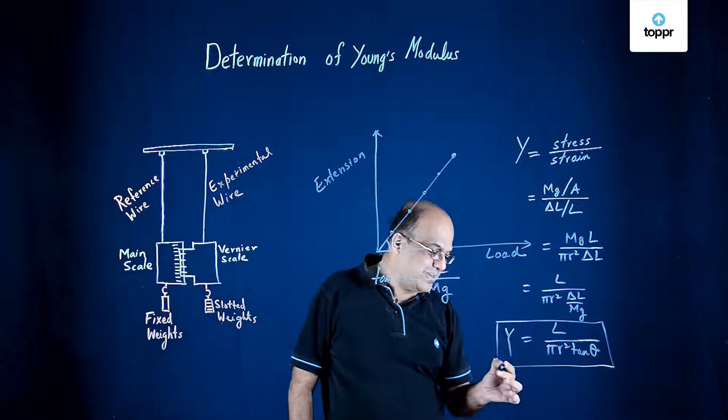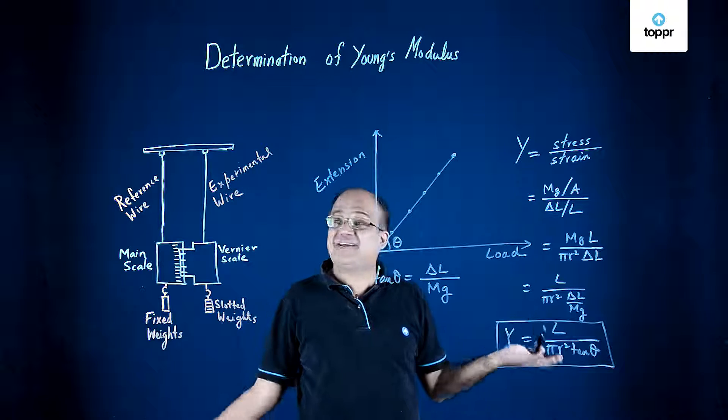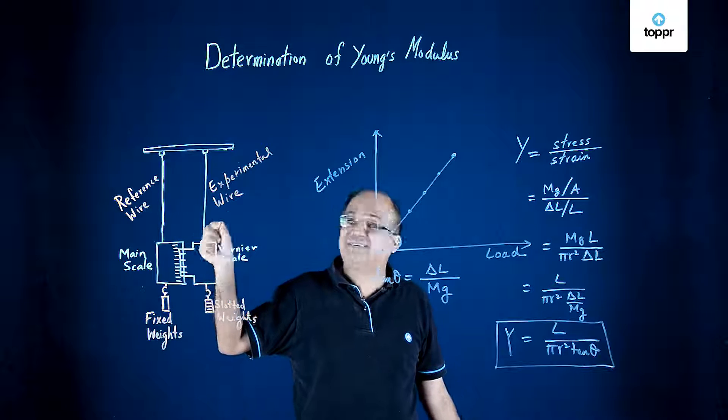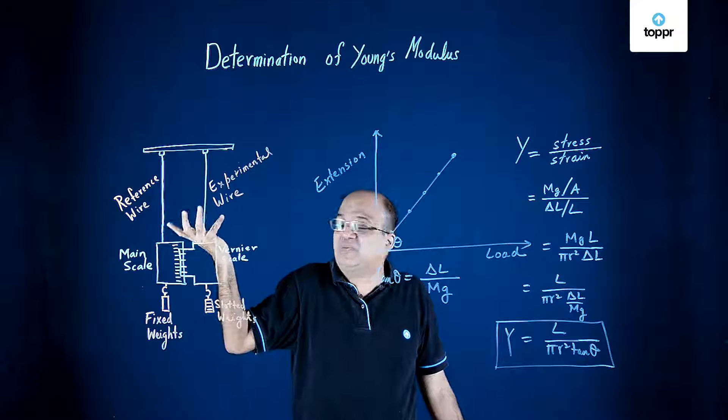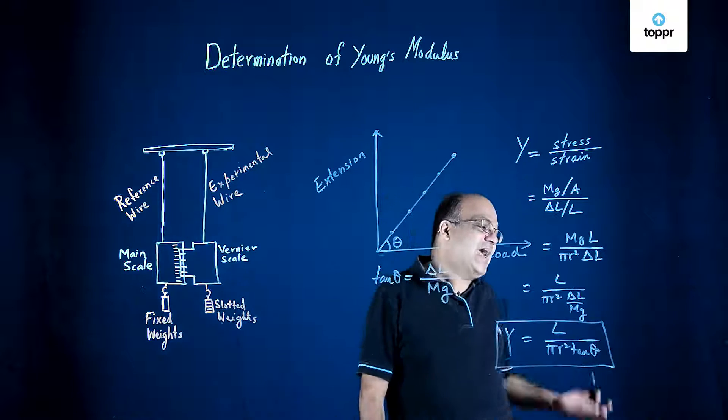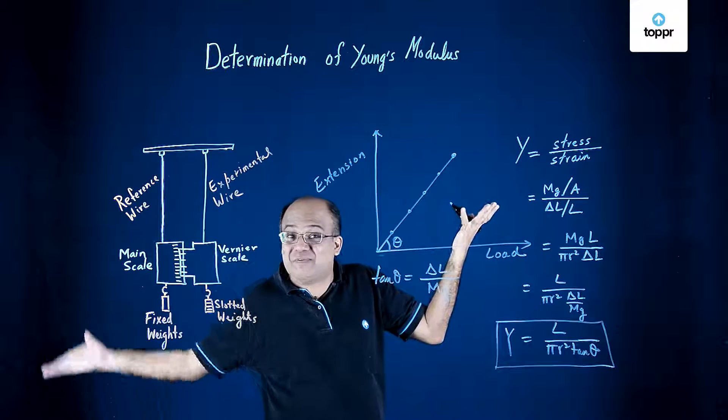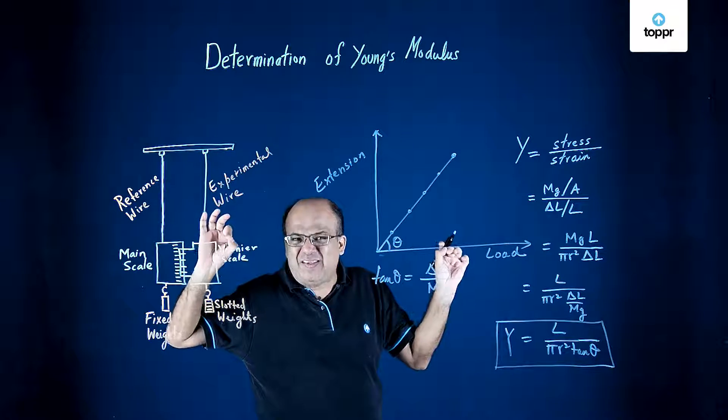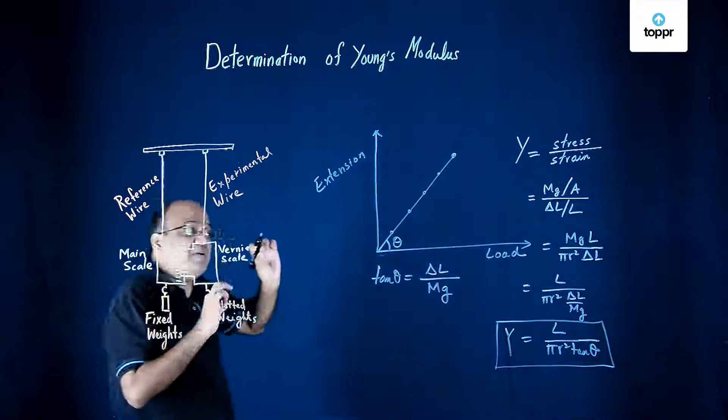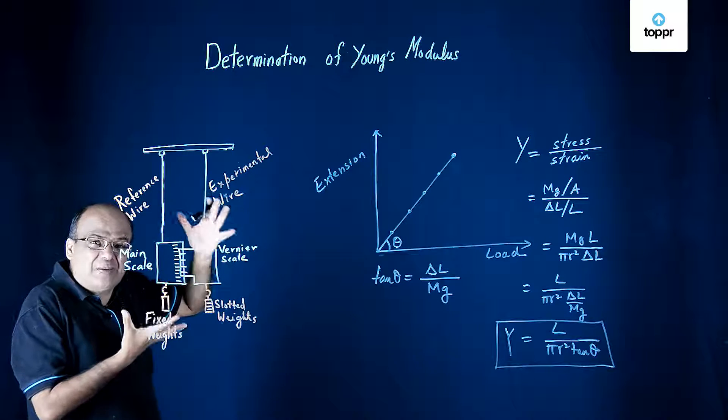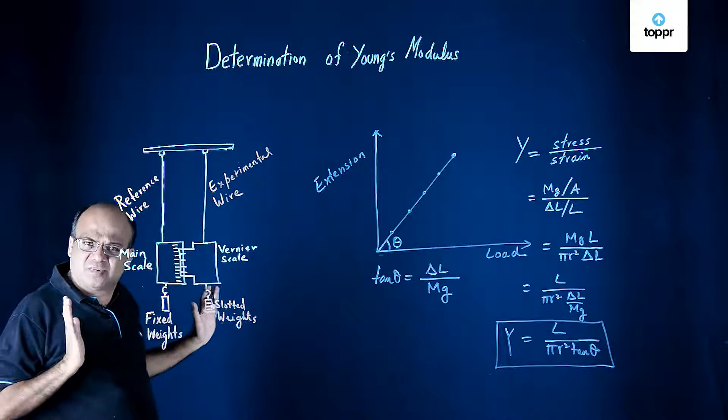So this way we can calculate Young's modulus. L we know, length of the wire. Pi r squared we have got. We have measured the radius. So we know pi r squared since we know r. And tan theta we get from the graph. And Young's modulus we have found out. So this is the determination of Young's modulus. Experimental determination of Young's modulus.